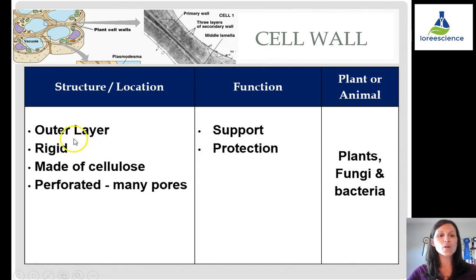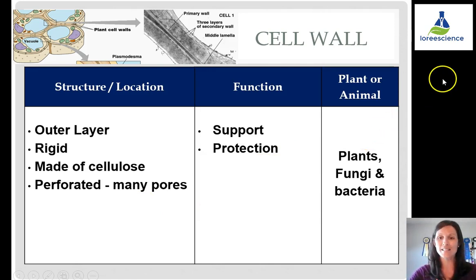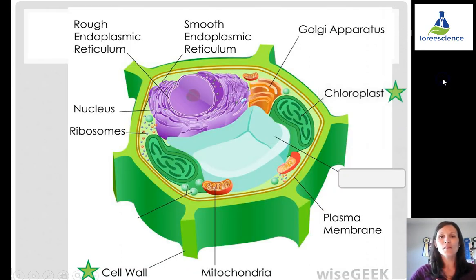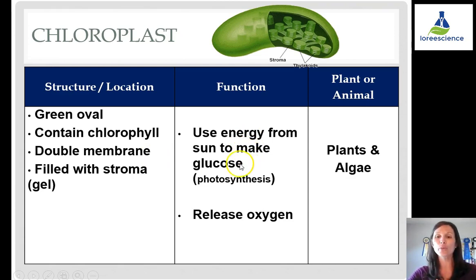The cell wall is the outermost layer, rigid, and made up of cellulose — which is indigestible to humans and is fiber. It is perforated with many pores so things can get in and out, and its job is to support and protect. The chloroplast contains chlorophyll, which is the molecule that allows it to take energy from the sun and make glucose via photosynthesis. It is filled with stroma, a gel-like fluid, and oxygen is released in the process of photosynthesis.